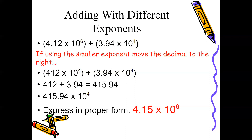Keep in mind 415.94 is not in scientific notation form — 415 is greater than 10. Place the decimal after the digit that falls between 1 and 10, which is after the 4, giving you 4.1594. We moved the decimal two places to the left, so we add two to the exponent, making the final answer 4.1594 × 10⁶.